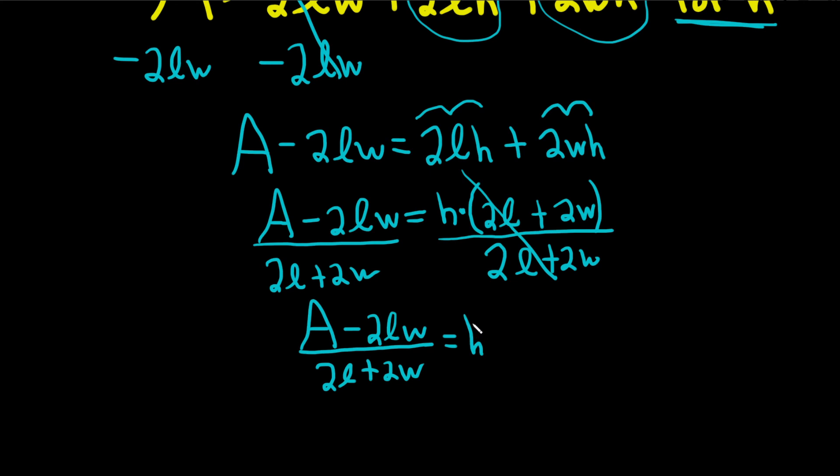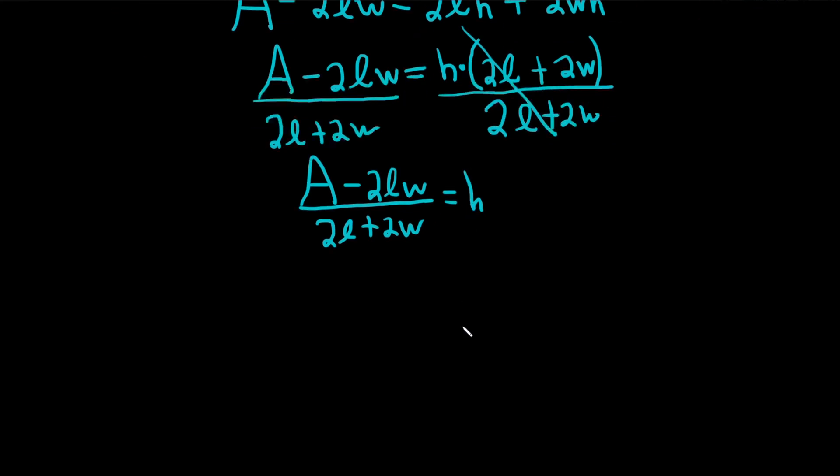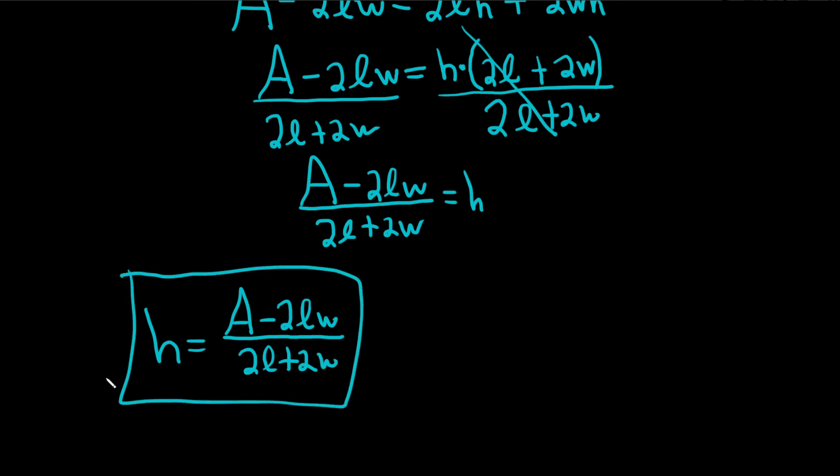We could finish here, but it's better to write the H on the left. So little H is equal to A minus 2LW over 2L plus 2W. That would be the final answer. I hope this video has been helpful. Good luck.